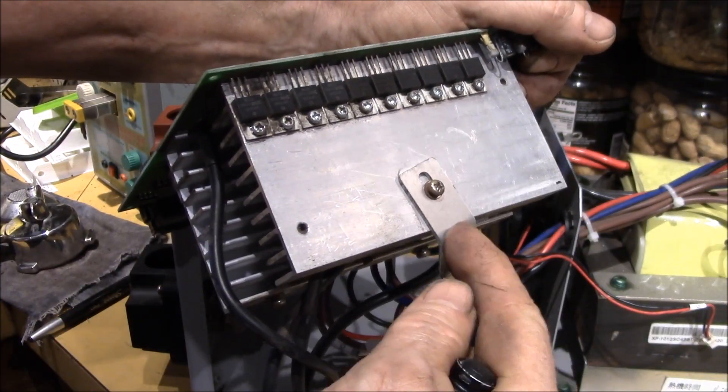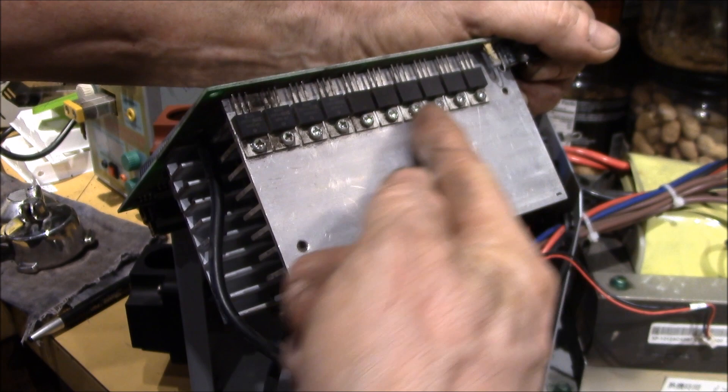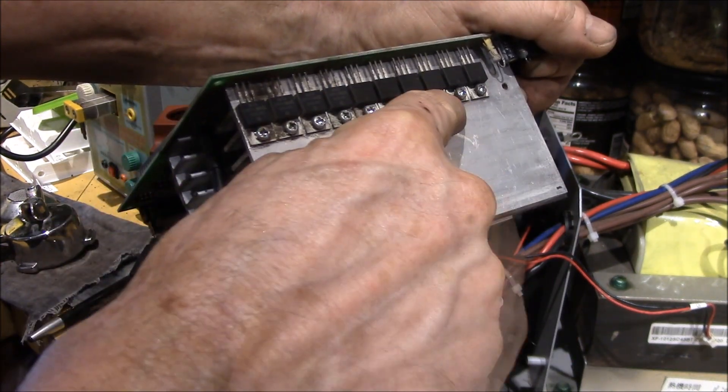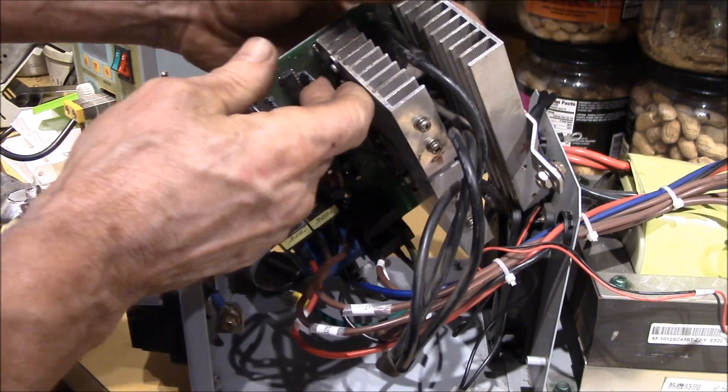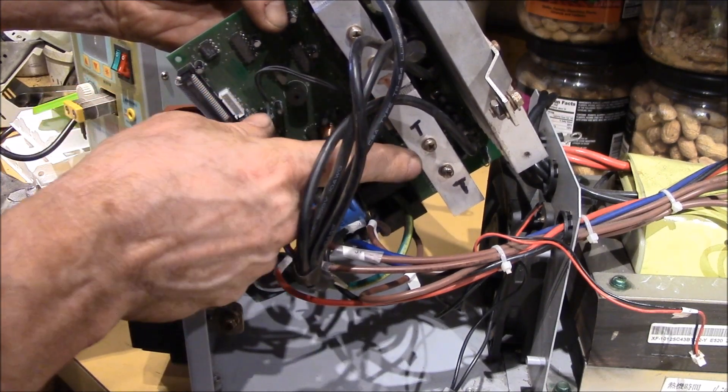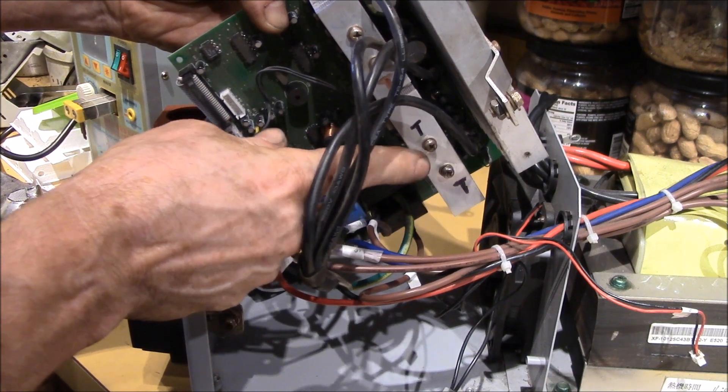So this is the fuse, 12 volt fuse coming in. So this is your positive side of the H bridge. And then you have five to one side, five to the other side. And then over here you've got your red and black going to the transformer. And you've got five MOSFETs here and five over here.